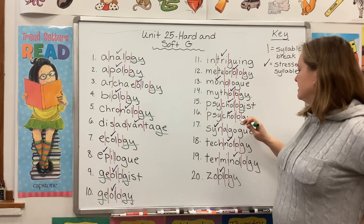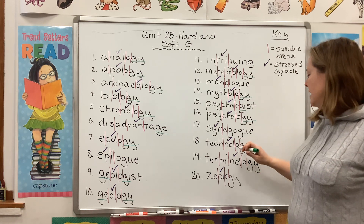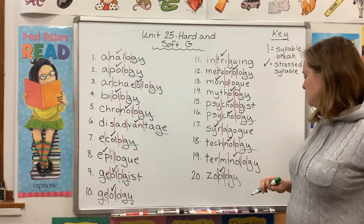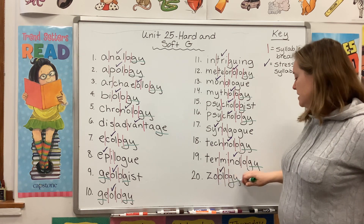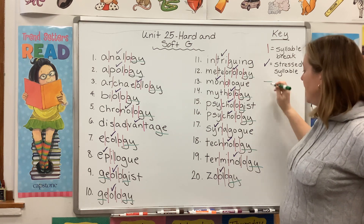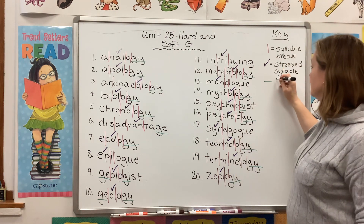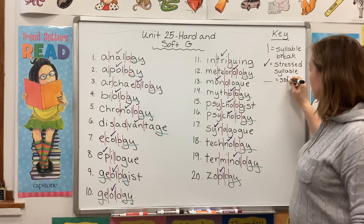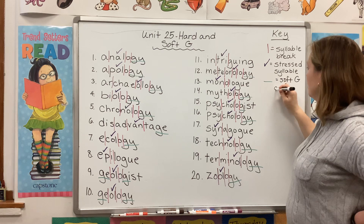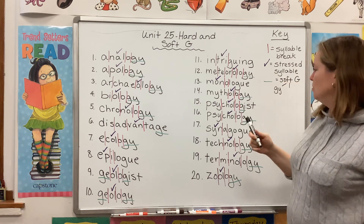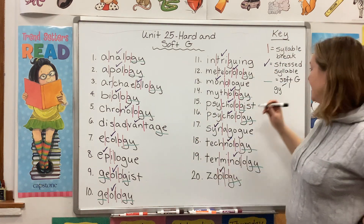Psychologist, G-I. Psychology, G-Y. Nothing in synagogue. Technology, G-Y. And zoology, G-Y. So everything I just underlined has a soft G, which means it makes a J sound. But I want you to notice soft G only hangs out with Y, with E, and with I. That's it.